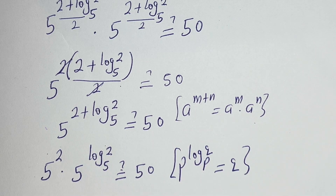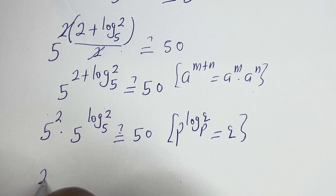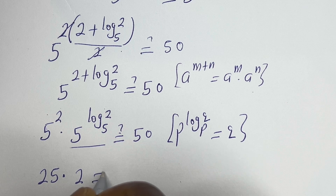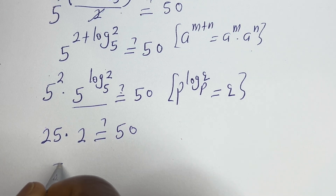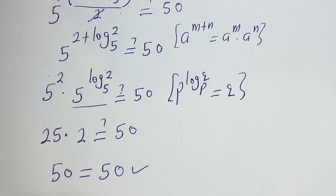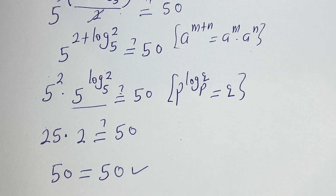Then this can be written as 5 squared multiplied by 5 to the power of log 2 base 5, which must equal 50. Note that if you have p to the power of log q base p, this is equal to q. So this becomes 5 squared, that is 25, multiplied by 2, which equals 50 — and 50 is equal to 50, which is true. I hope you enjoyed the video. Thank you for watching. Please don't forget to like, share, comment, and subscribe to my channel. Bye.